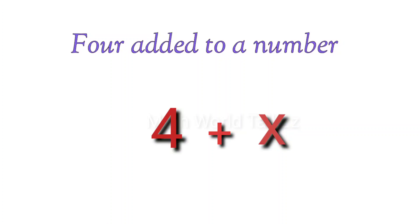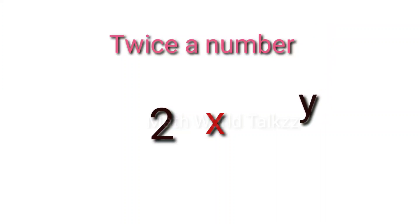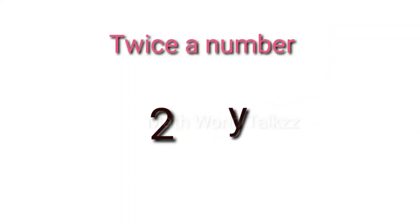Let's check another ordinary language: 'twice a number.' Twice should be there in the expression, and for that number we can take any variable — here I'm taking y. So 2 into y, that is 2y, is the algebraic expression.